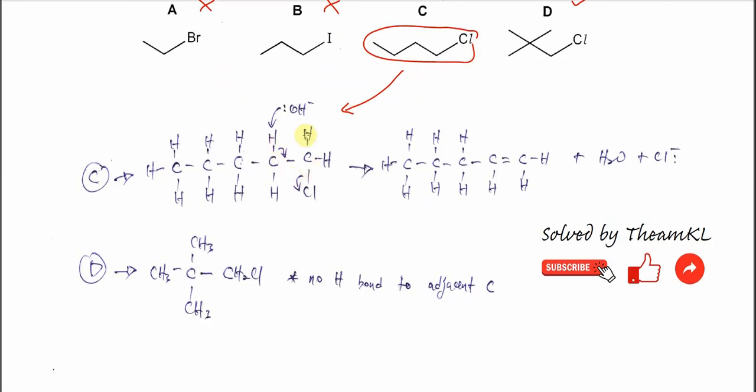The adjacent carbon must have hydrogen. For elimination to happen, the adjacent carbon must have a hydrogen. This is the neighboring carbon, and this is the carbon with the chlorine. The neighboring carbon must have at least one hydrogen.